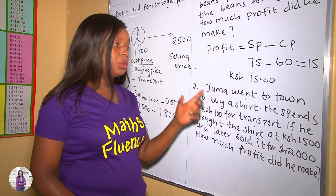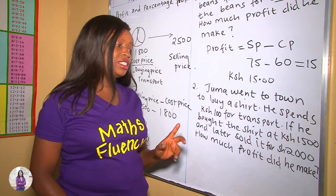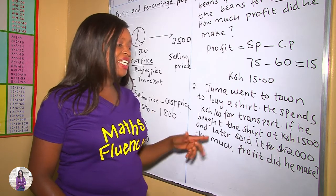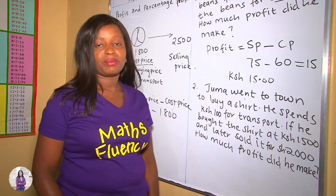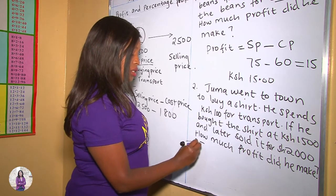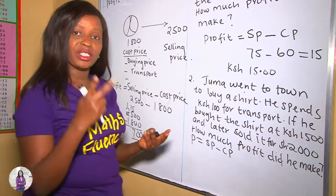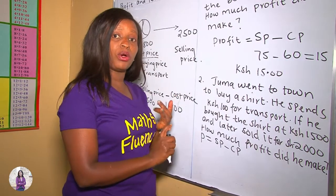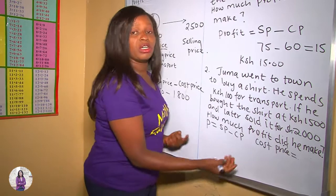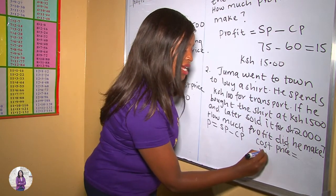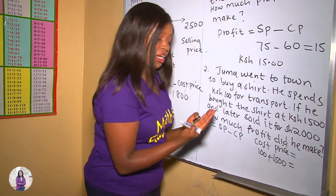In this example, we are told that Juma went to town to buy a shirt. He spent 100 shillings for transport. He bought the shirt at 1,500 shillings and later sold it for 2,000 shillings. How much profit did he make? In this case, there are two costs incurred: the cost for transport and the cost for buying the shirt. So the cost price equals transport of 100 shillings plus 1,500 shillings, which gives a cost price of 1,600 shillings.